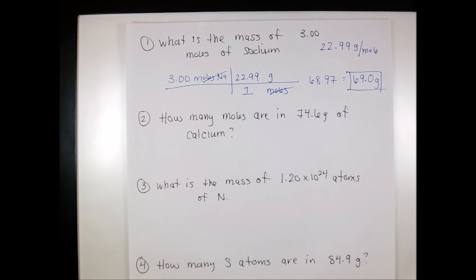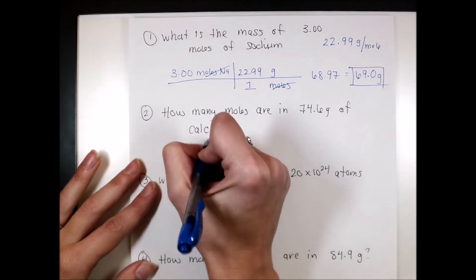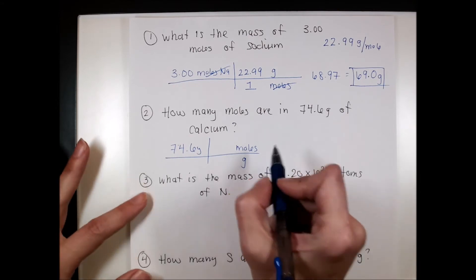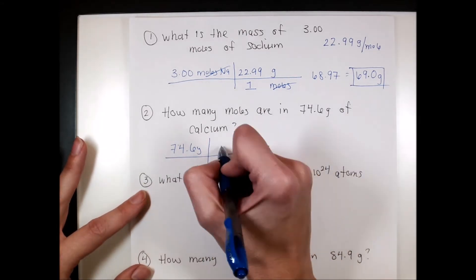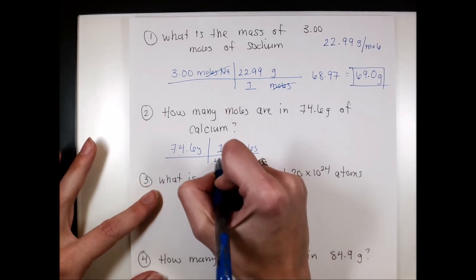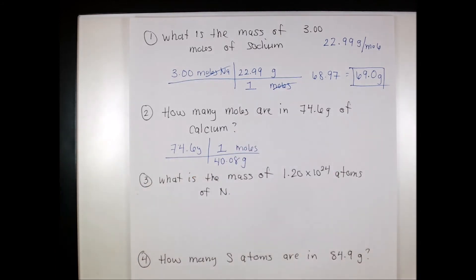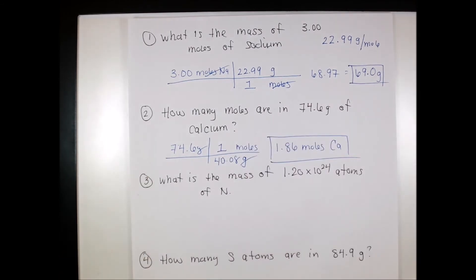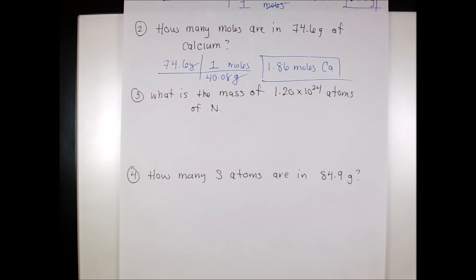Now converting from grams to moles: we flip the conversion factor and put moles on top and grams on the bottom. For calcium with 74.6 grams, we look up calcium on the periodic table — it's 40.08 grams per mole. Dividing, we get 1.86 moles of calcium. By definition, the atomic mass always gives us one mole, making these conversion factors straightforward.